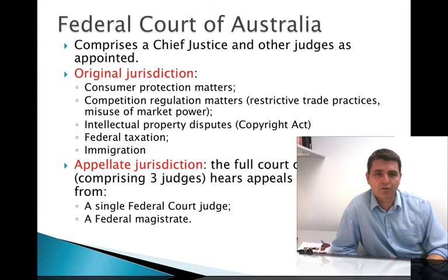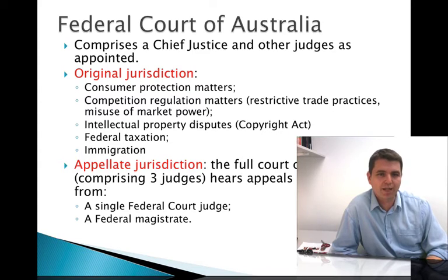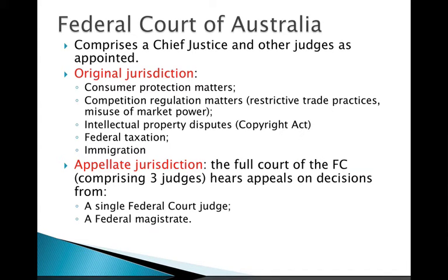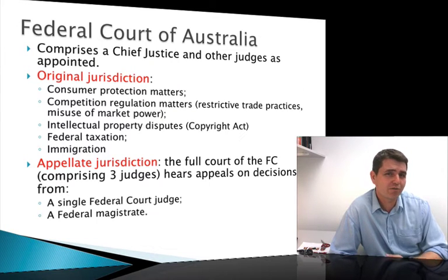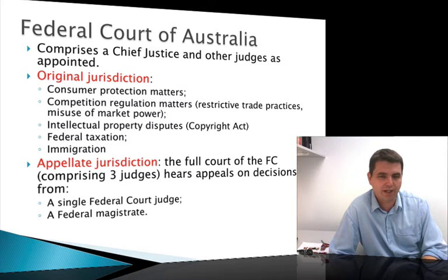With the Federal Court of Australia, there is an original jurisdiction covering a limited number of matters: consumer protection, competition regulation, intellectual property, taxation, and immigration. You can appeal from those areas to the Full Court of the Federal Court, where three judges sit and hear appeals from a federal court judge or a federal magistrate. Most areas covered by the federal court come from the heads of powers where the federal government has the ability to make law.